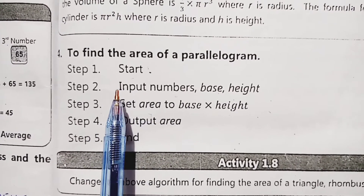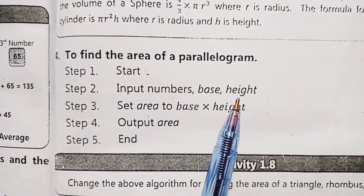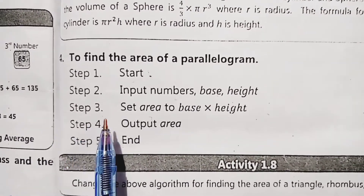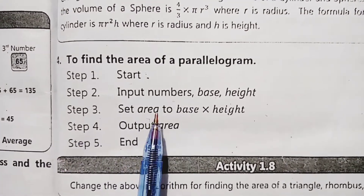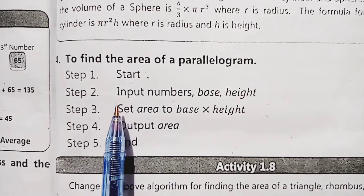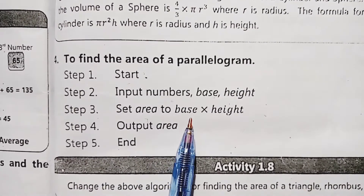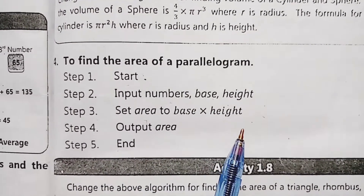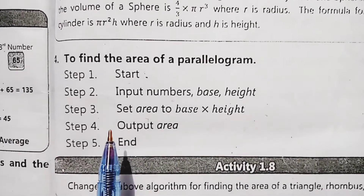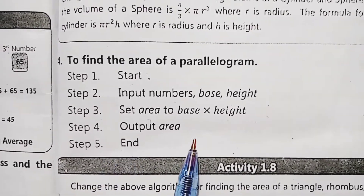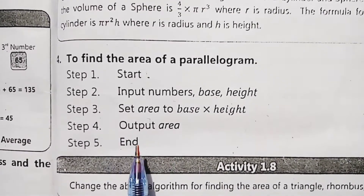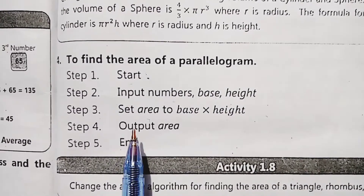Using the INPUT keyword, numbers are entered in the form of base and height. Step number 3, calculation is done using keyword SET. Set area to base multiplied by height — the values of base and height will be multiplied. Step number 4, the area will be displayed as output with keyword OUTPUT.